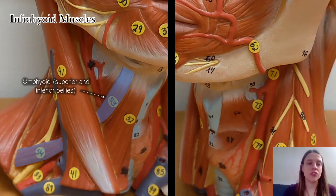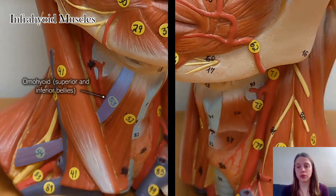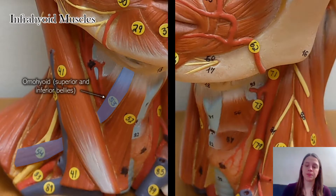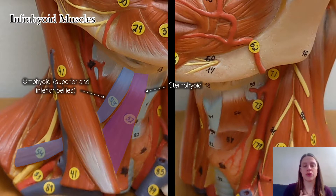Moving on to the infrahyoid muscles: there's the omohyoid — 'omo' meaning shoulder — which has a superior belly and an inferior belly. Then there's the sternohyoid, going from the sternum to the hyoid.